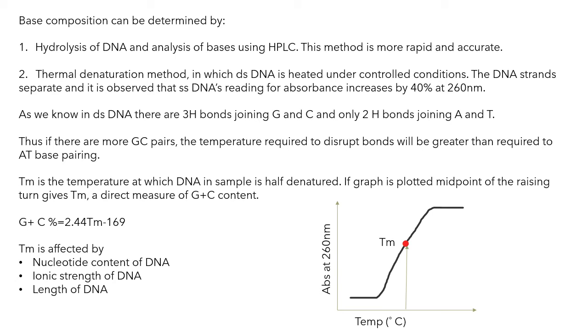These are some factors that affect the melting temperature of the DNA. Thus, if there are more GC pairs, the temperature required to disrupt the bond will be greater than that required for AT base pairing.